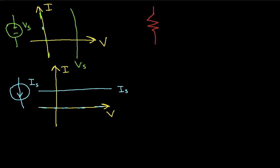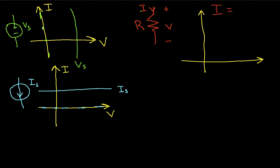Let's look at a resistor — where this is the voltage across the resistor and that's the current through the resistor. If I draw my VI curve, I can use Ohm's Law, which hopefully you already know. The current through a resistor is the voltage divided by the resistance. That basically says the relationship between I and V is going to be a straight line with a slope of 1 over R. So a resistor is a straight line.